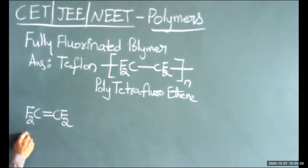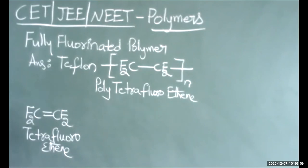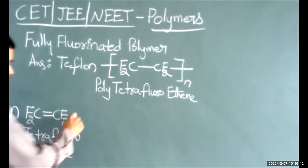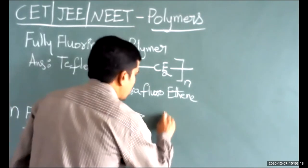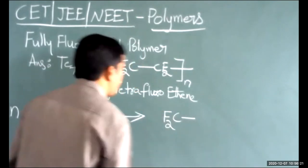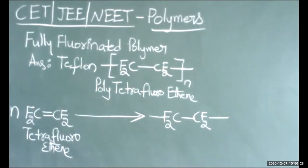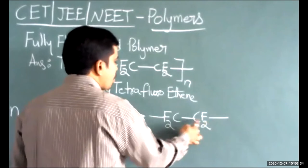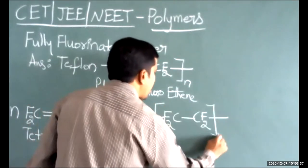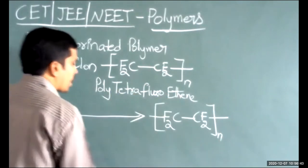Tetrafluoroethene is the monomer. When n molecules of tetrafluoroethene undergo polymerization, the pi bond is broken and two new sigma bonds are formed, giving CF₂-CF₂ units repeated n times.